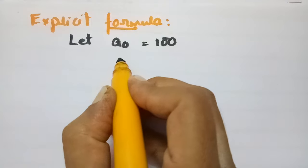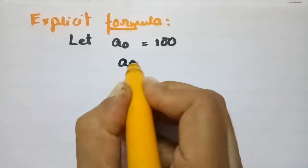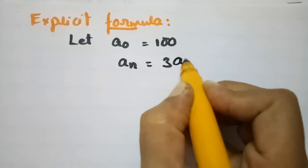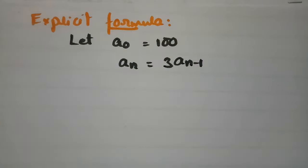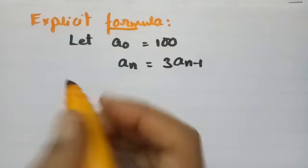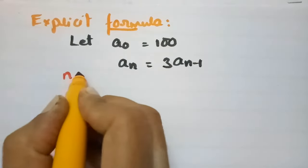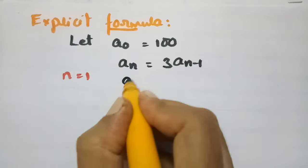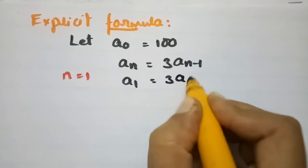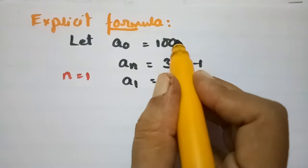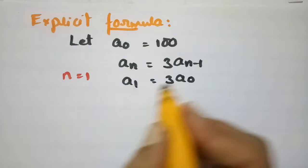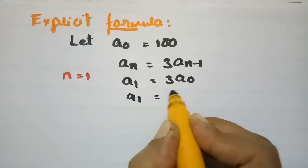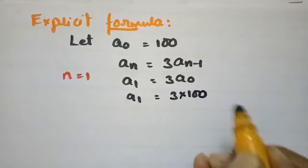We have An equal to 3 times of An minus 1. If we put n equal to 1 in this formula, then A1 is equal to 3 times of A naught. What is A naught? A naught is 100. So A1 equals 3 into 100.